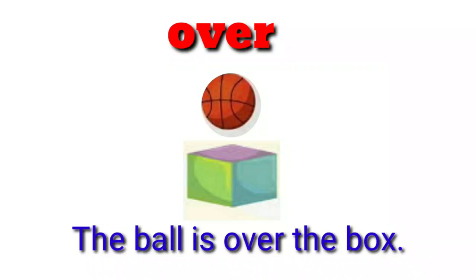Over. The ball is over the box. Many people confuse 'over' and 'above'. 'Over' is used when one object is directly above another object — directly on top in position. We use the preposition 'over' in that case.